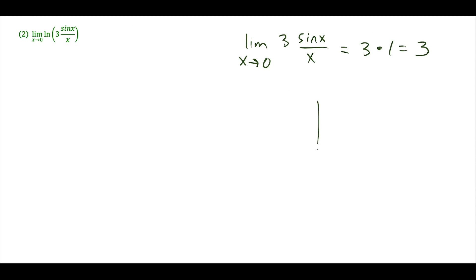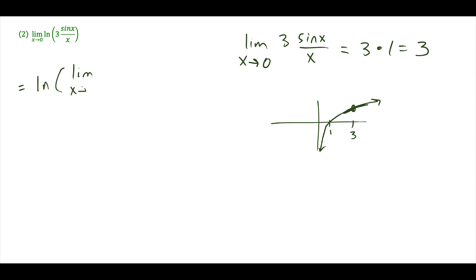Now, the natural log function is continuous for all values of x greater than 0. Our limit L equals 3, which is definitely a location where natural log is continuous, so the theorem is satisfied. This tells us our limit equals ln of the limit as x approaches 0 of (3·sin(x)/x). Since that inside limit equals 3, our final answer is ln(3).